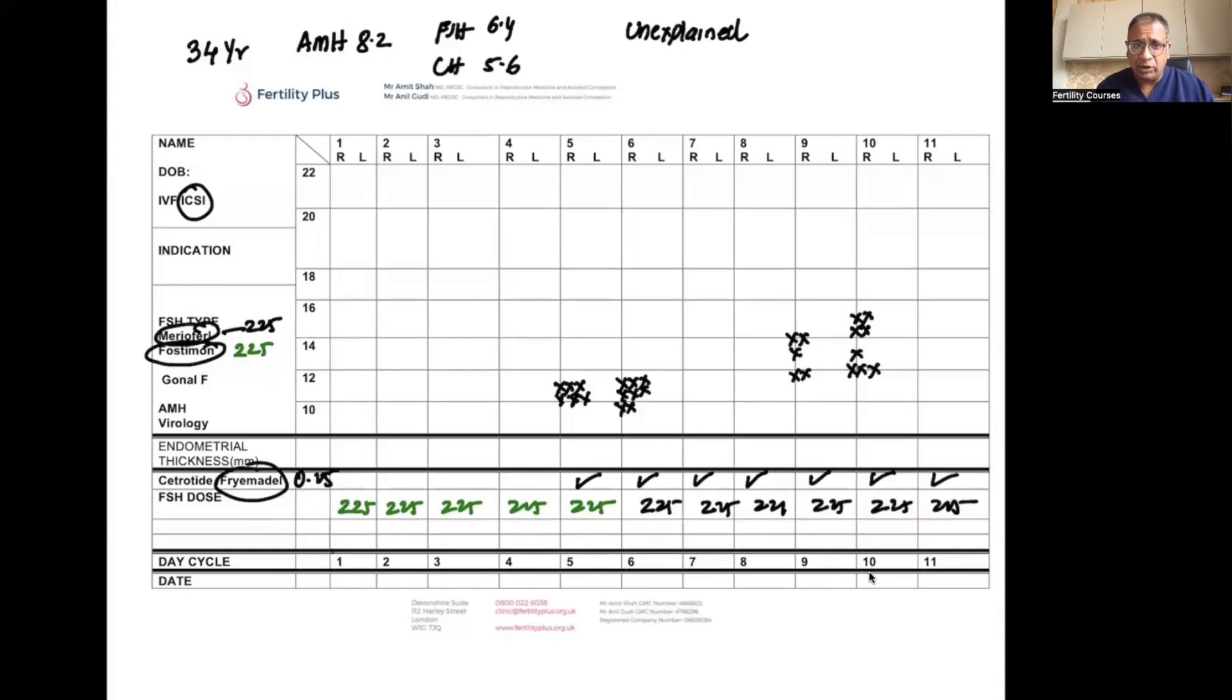This was a lady who was 34 years old with an AMH of 8.2, normal FSH, unexplained infertility, who was stimulated on an antagonist protocol starting with FSH at 225 and then moving to HMG from day 5.